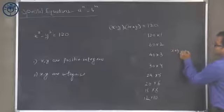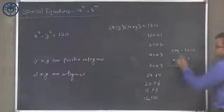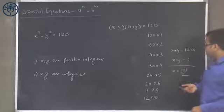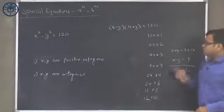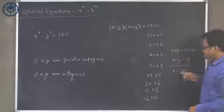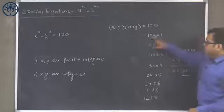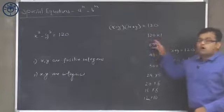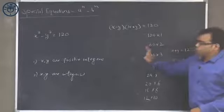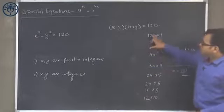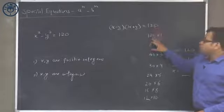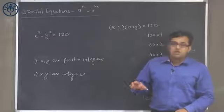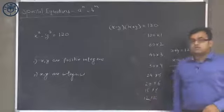If x plus y equals 120 and x minus y equals 1, adding these gives x equals 121/2, which is 60.5 — not an integer. So this does not satisfy the condition. The reason is the parity of the two factors is not the same. Even plus even is even, and odd plus odd is even. So whenever we represent 120 as a product of two numbers, both should have the same parity — both even or both odd. In that case we count those combinations as our answer.